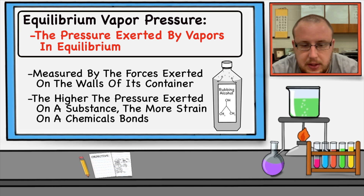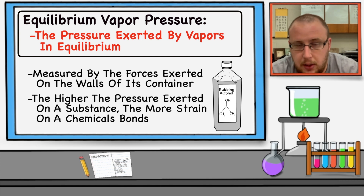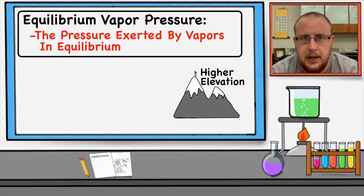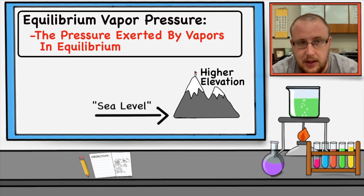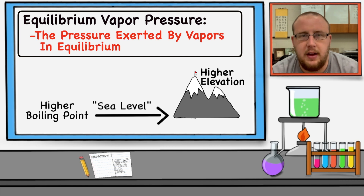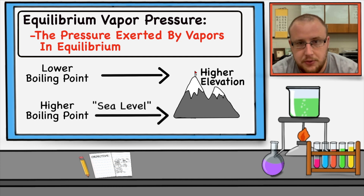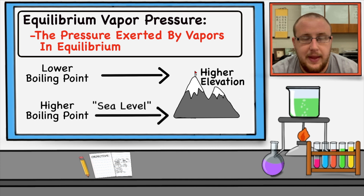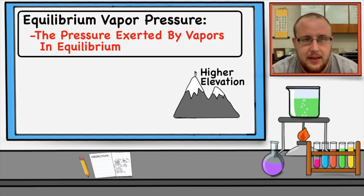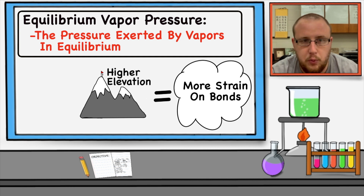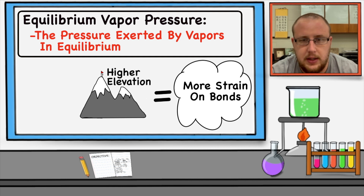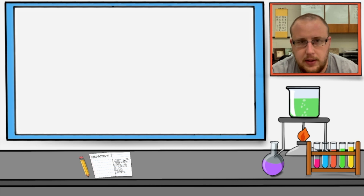With vapor pressure in general, the higher the pressure exerted on the substance, the more strain it will have on the substance's bonds. For example, if we climb in elevation — going from sea level to the top of a mountain — a cup of water is going to have a lower boiling point at higher altitude. The pressure of all the molecules at higher elevation is greater and puts more strain on the bonds, lowering the temperature required for those bonds to change from liquid to gas. Vapor pressure pairs with other properties to affect them — increasing or decreasing boiling point by adding different amounts of strain to the bonds.